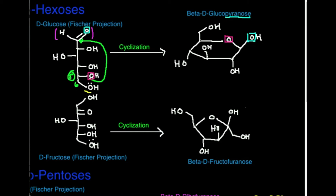You can also have a decyclization that occurs — going from the cyclic form back to the linear form. But the equilibrium actually favors the cyclic form. Also notice the anomeric carbon is drawn in the beta configuration. Beta is more stable than alpha because there is more hydrogen bonding in the beta configuration of the anomeric carbon.